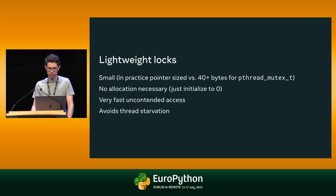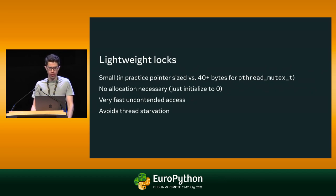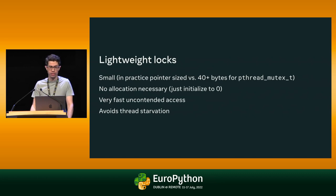The locks have important attributes: they're small — as small as two bits, though in no-GIL Python they typically require the same space as a pointer, so eight bytes in a 64-bit system. That's still a lot smaller than pthread mutex or C++11 standard mutex, which take 40 or more bytes. The locks only need to be initialized to zero, don't require any memory allocation, and have fast uncontended access — important because the most common case is that only one thread accesses a given collection at a time. Finally, they avoid thread starvation by eventually handing off lock ownership to threads in the order they attempt to acquire it.